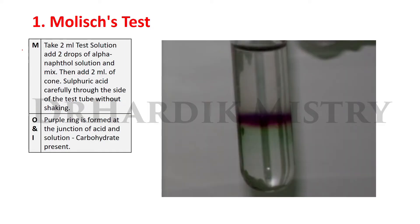Observation: A purple ring is formed at the junction of the acid and solution. Inference: Carbohydrate is present. That is the Molisch test.